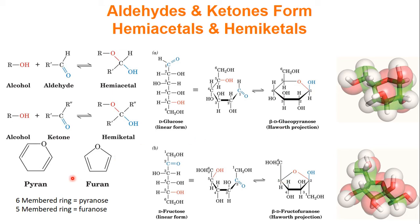A six-membered ring is called pyranose, and a five-membered ring is called furanose. So here we have beta-D-fructopyranose, or beta-D-glucopyranose, and I'll talk about what these betas mean in a second.